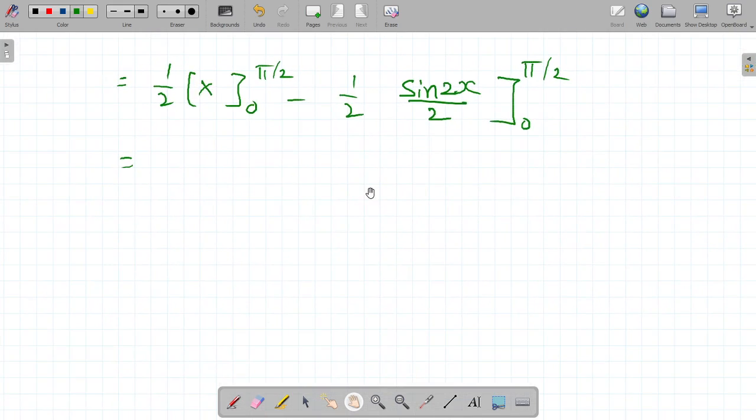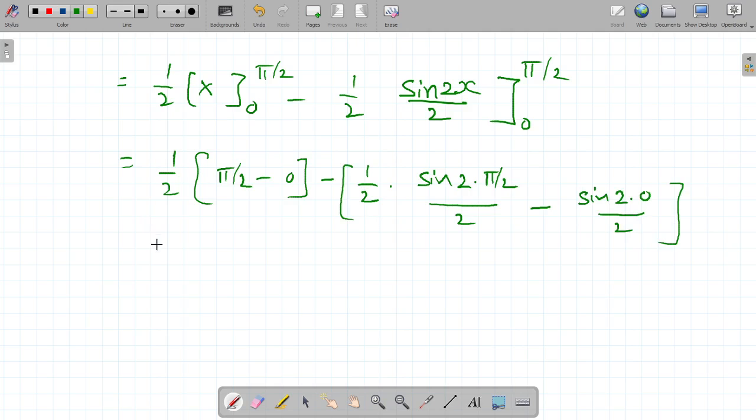Next step is 1 by 2 into x value pi by 2 minus 0 minus 1 by 2 into sin 2x. x value pi by 2 into 0 by 2. 1 by 2 into pi by 2 minus 1 by 2 into sin 2 to cancel sin pi. Sin 0 is 0. Sin pi by 2 is 1. Sin pi is 0.